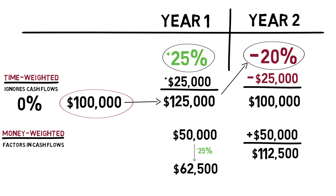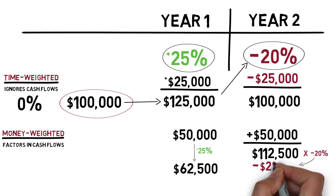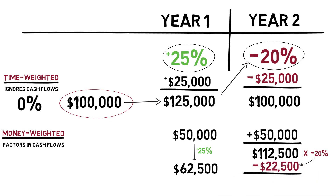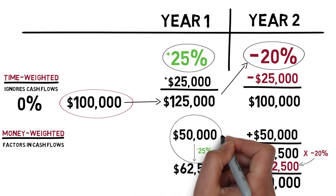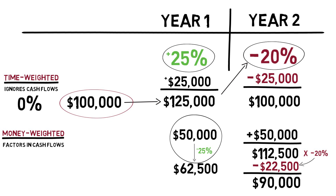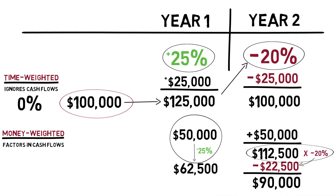20% times $112,500 is $22,500, and that brings us down to $90,000. Since we had less money invested during the good first year period, and we had more money invested during the bad second year period, our money-weighted rate of return is actually negative 6.83%.